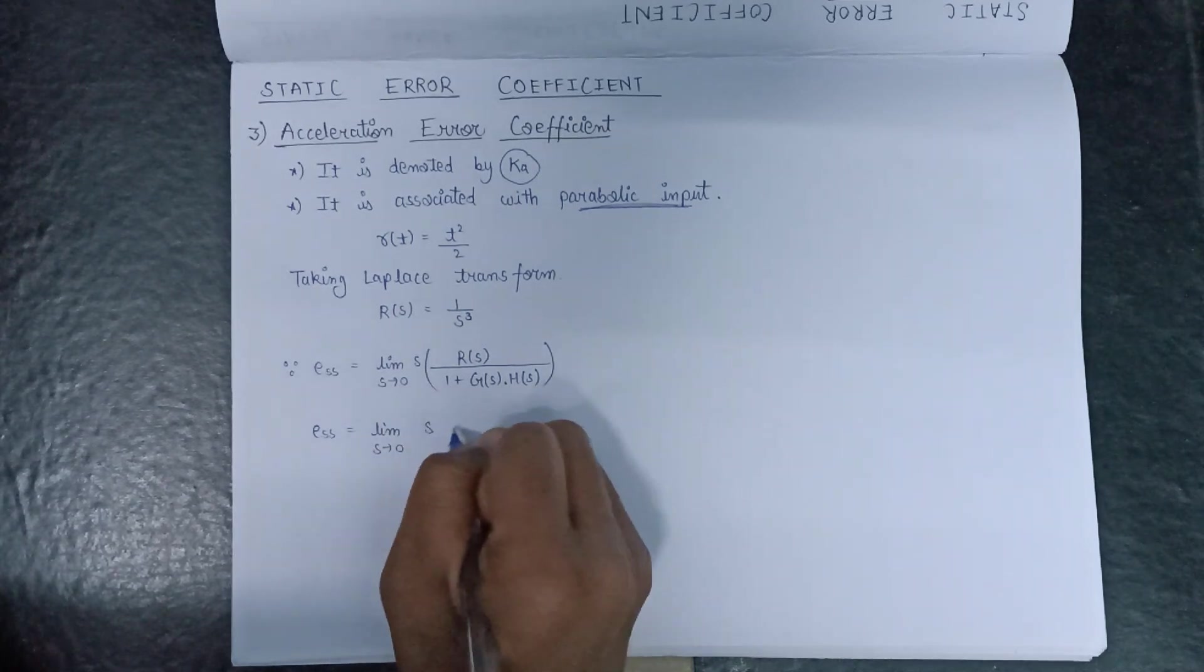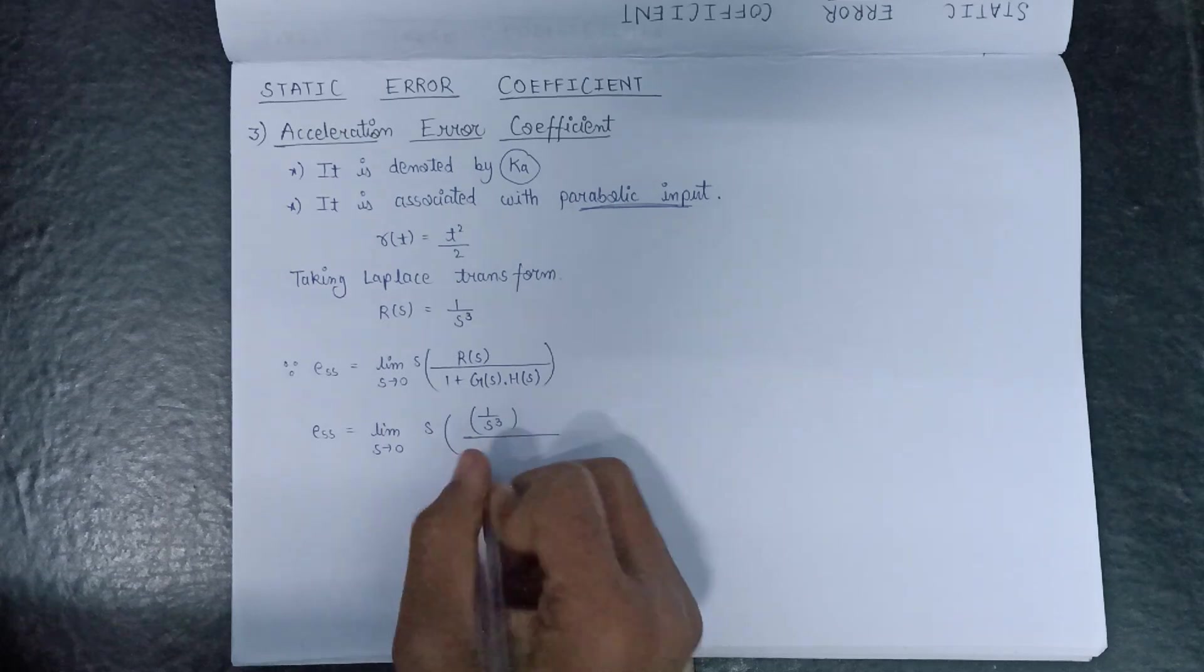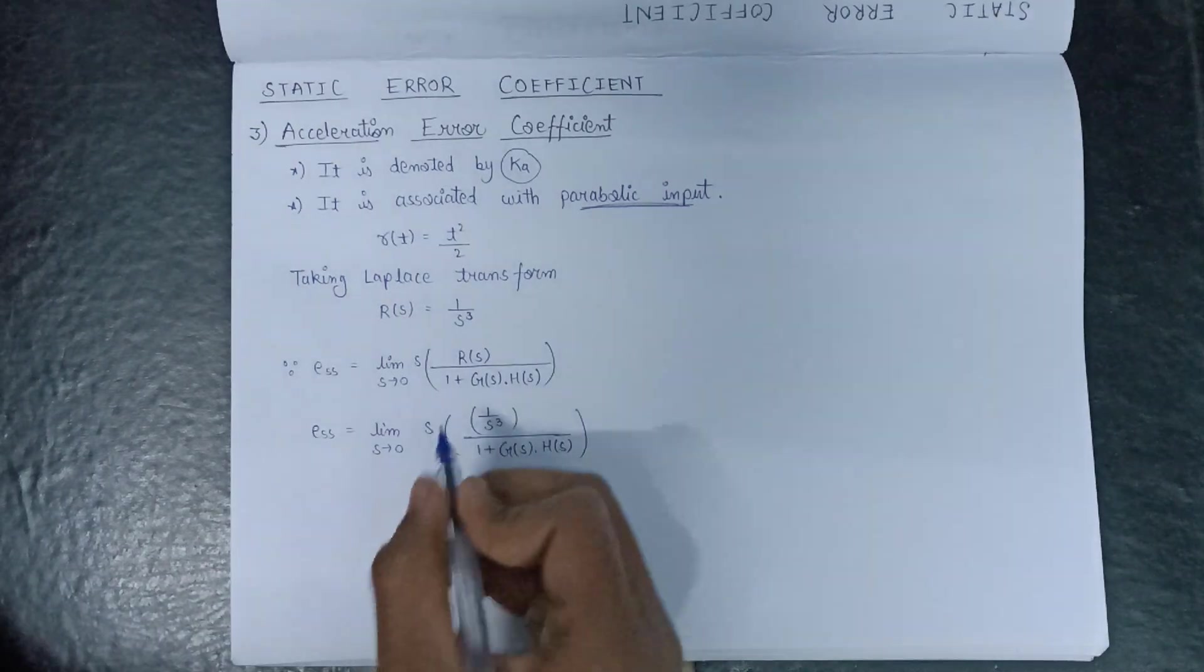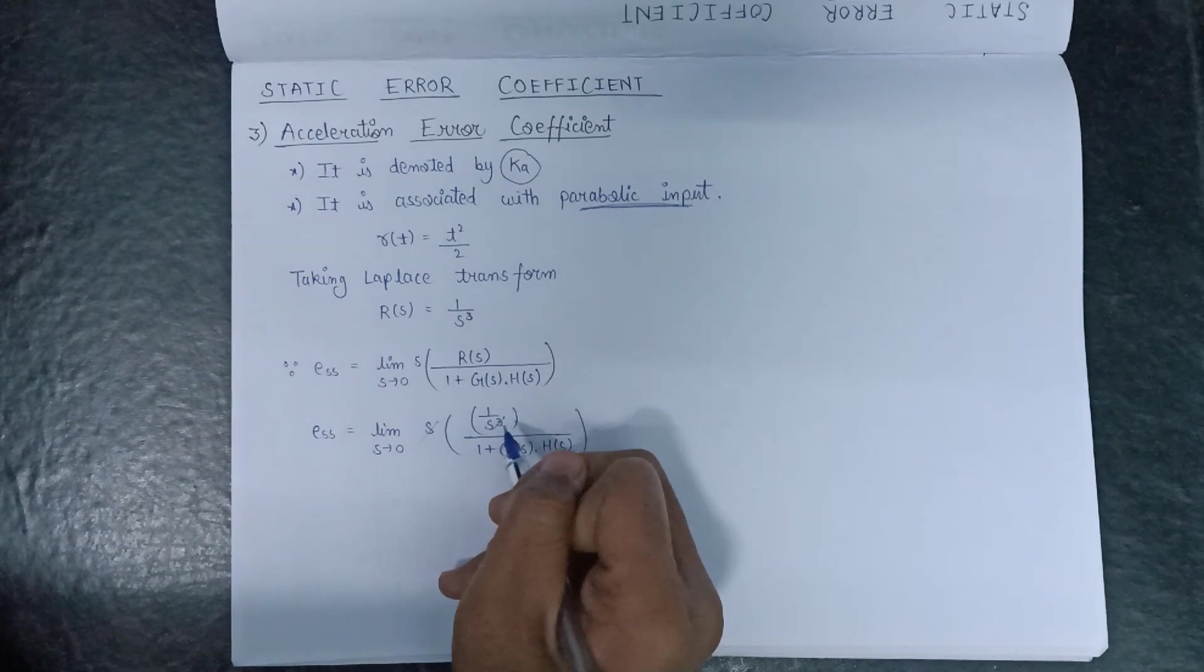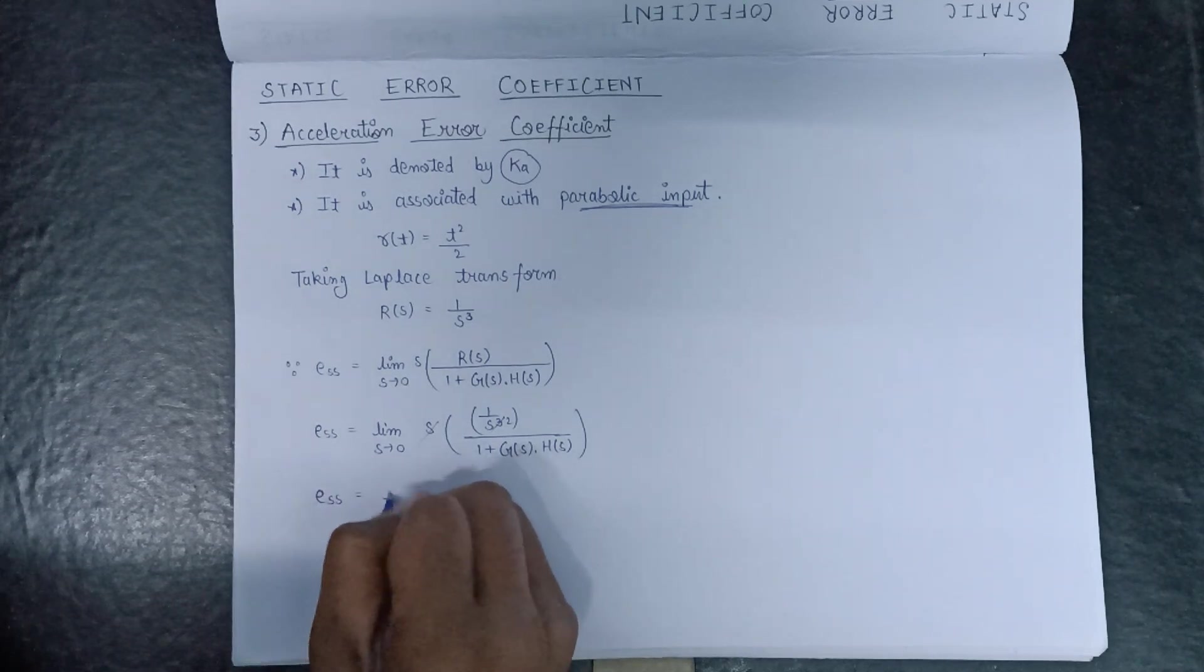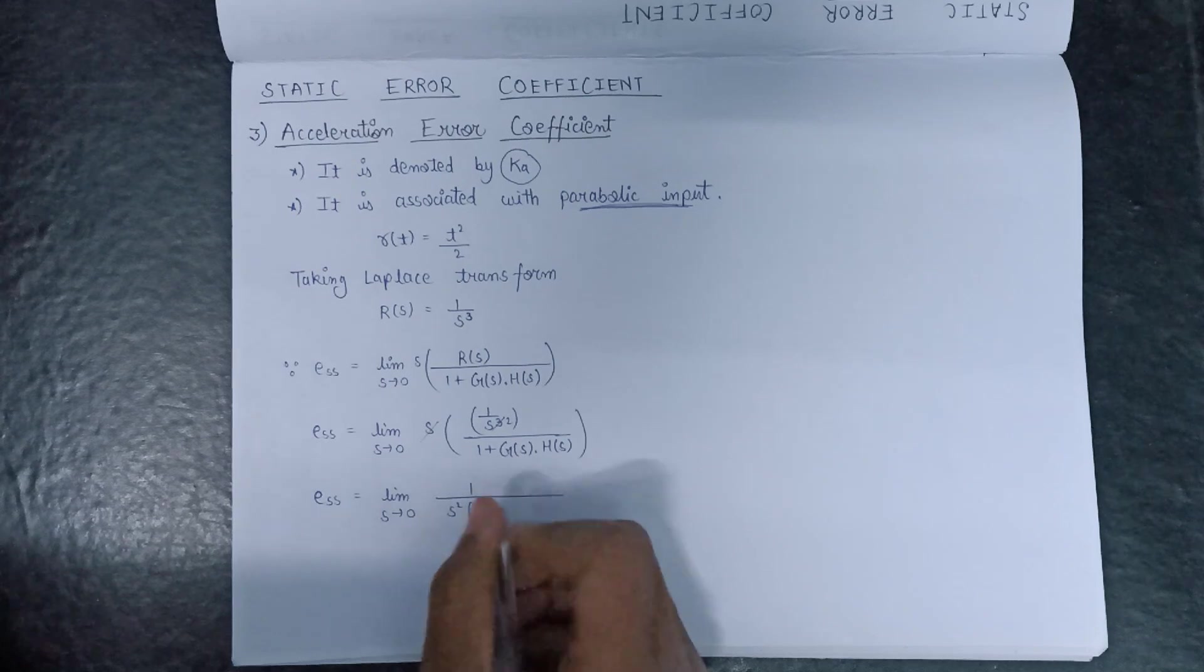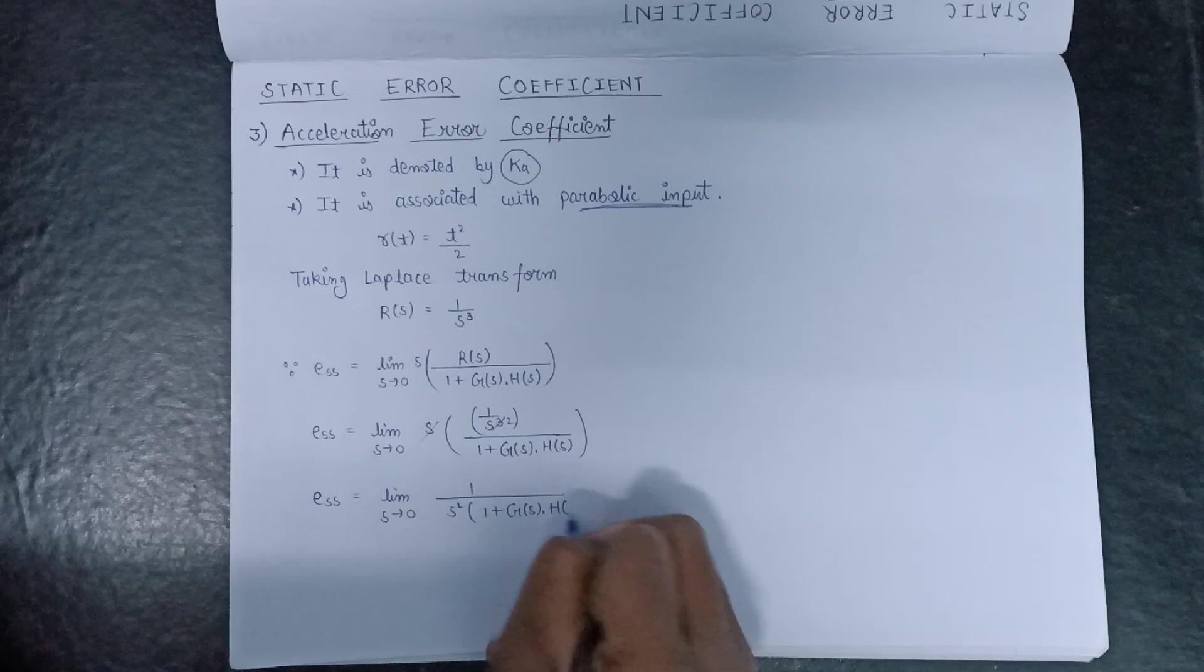we get E(s) equals to limit s tends to 0, s into 1/s³ over (1 + G(s)·H(s)). This s will cut down with s³ and it will become s². So E(s) will become limit s tends to 0, 1/(s²(1 + G(s)·H(s))).